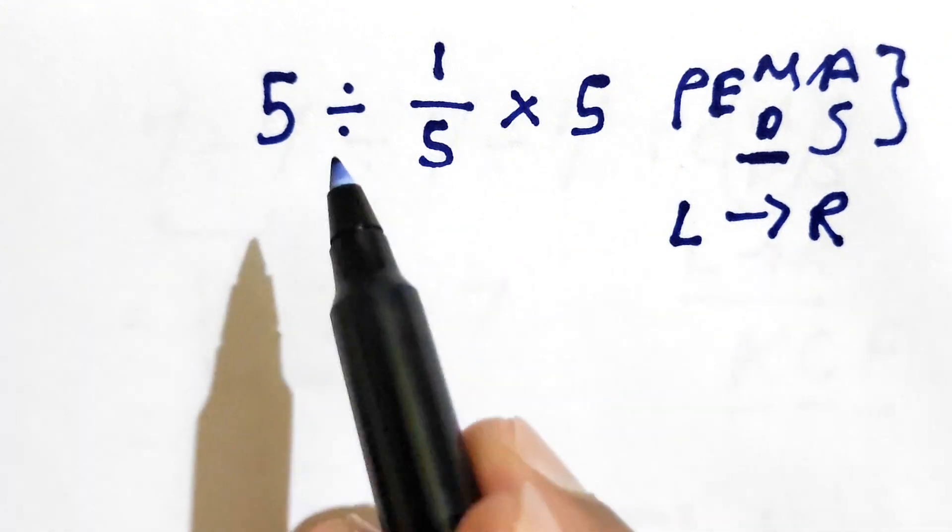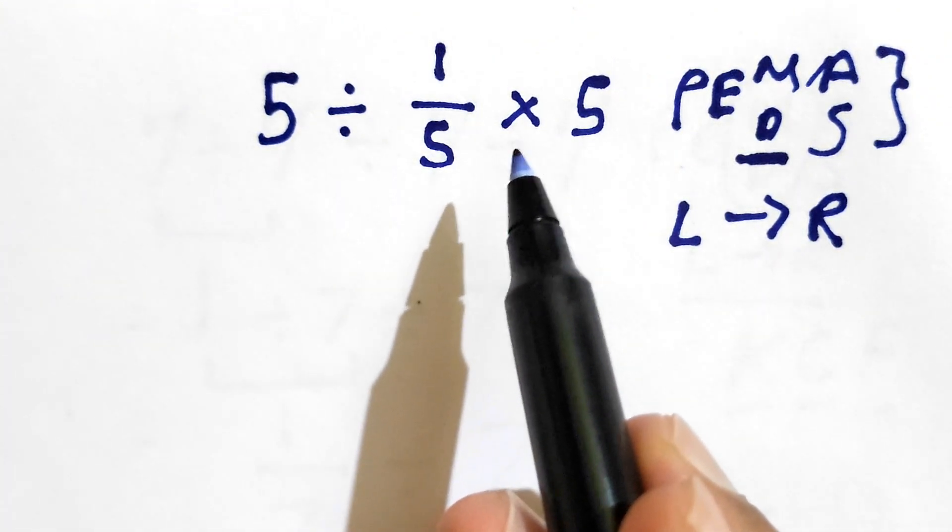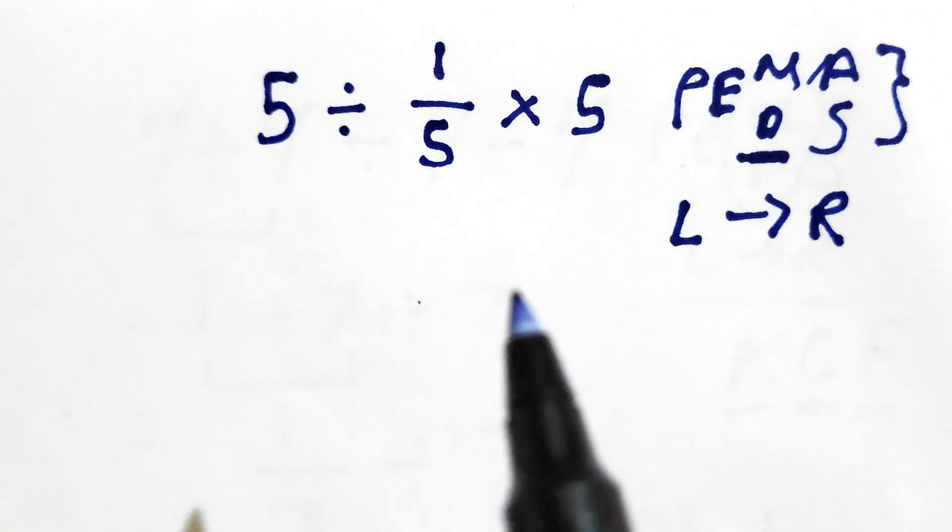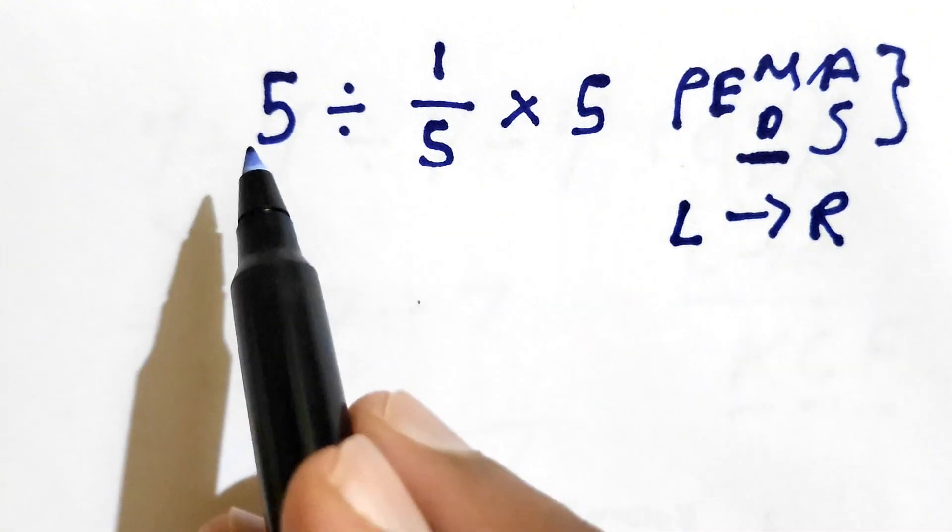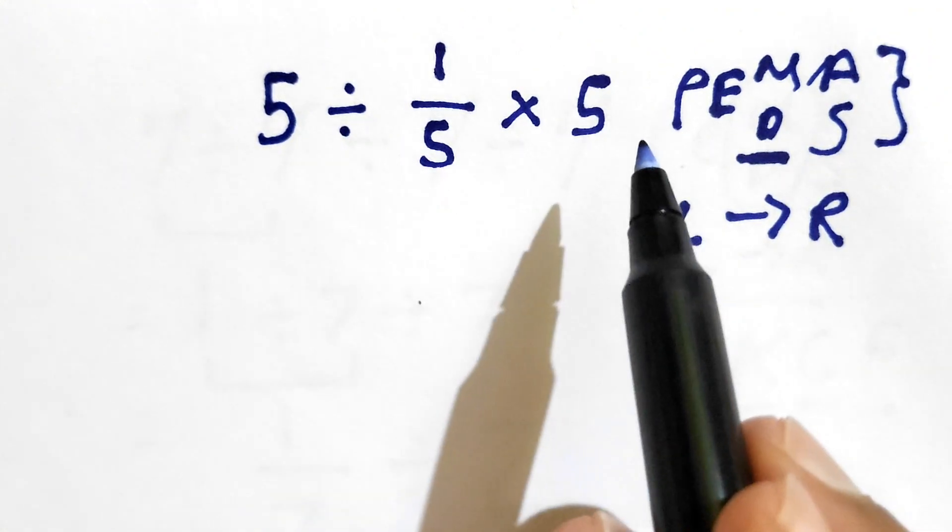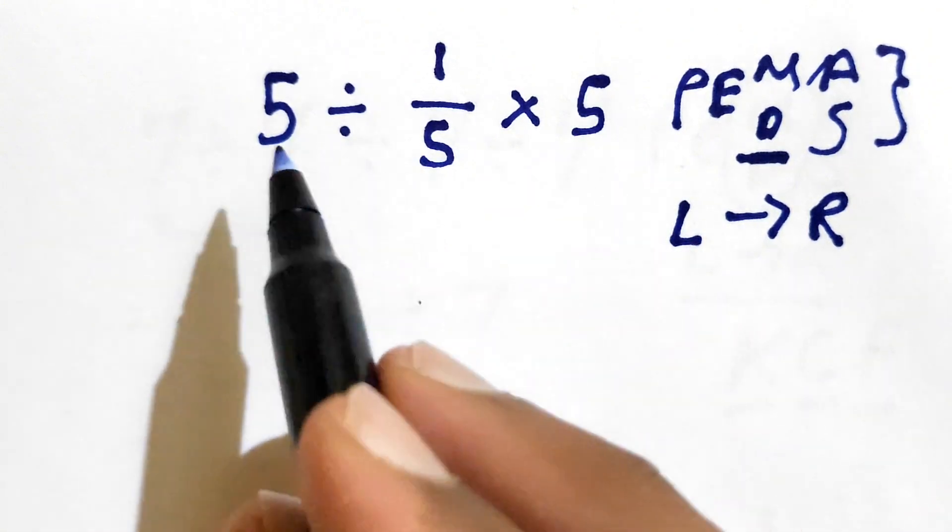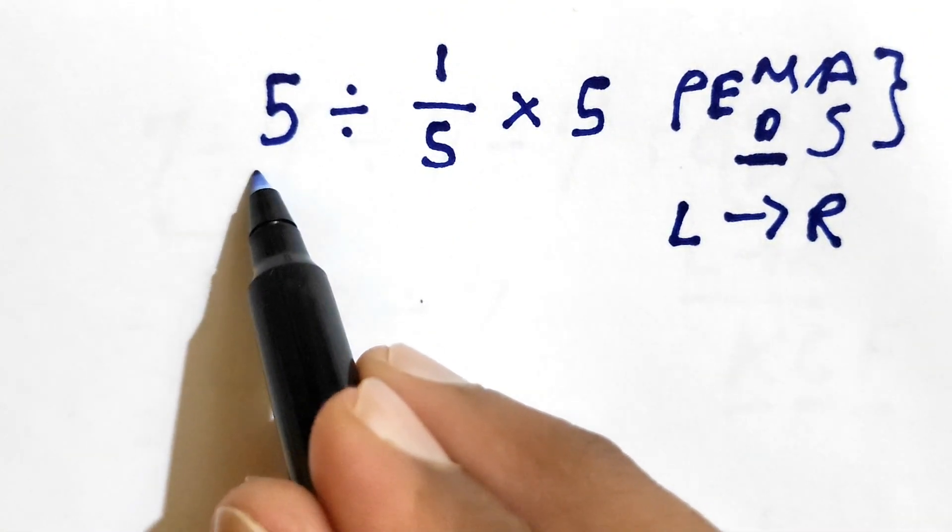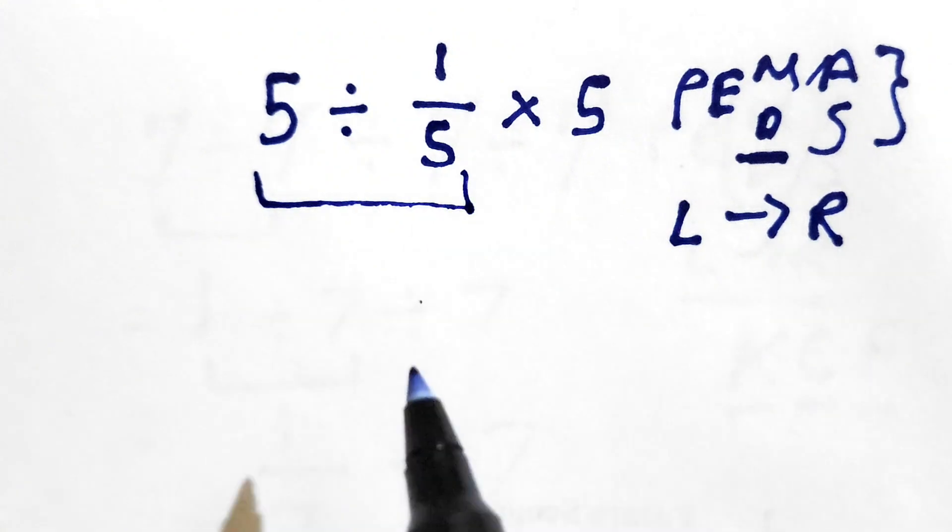As we can see in this expression, there is division and multiplication. The priority of multiplication and division is the same, but we need to solve first whichever comes from left to right. So going here to here, we need to solve first division, that is 5 divided by 1 over 5.